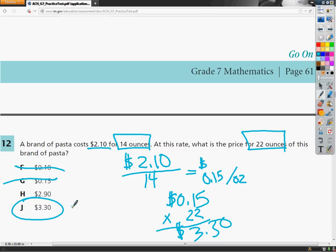If you want to set up a proportion, feel free to do it. It would be $2.10 over the number of ounces that cost $2.10, which is 14, set it equal to something over 22 ounces. Remember, if you've got ounces on the top, you want to have it on the bottom as well. In my class we talk about insane asylums. In an insane asylum, you have two types of people who are there.